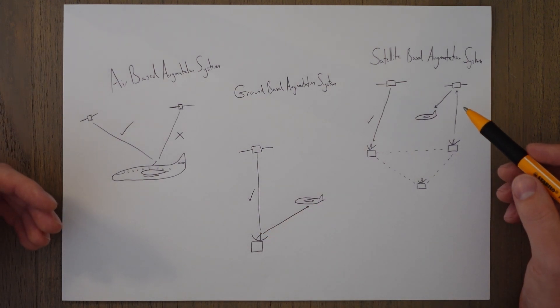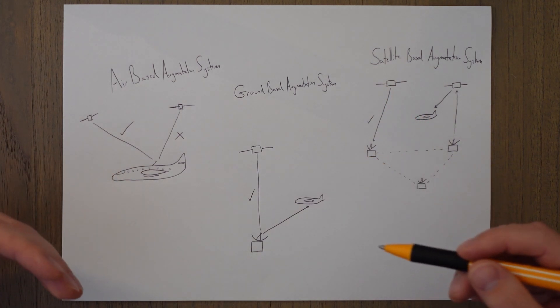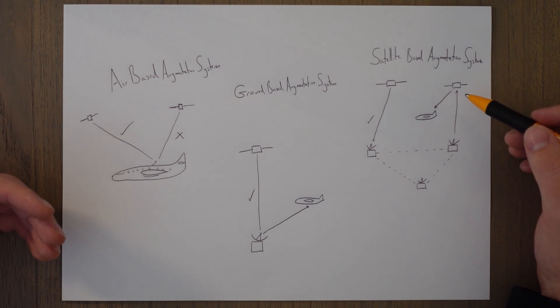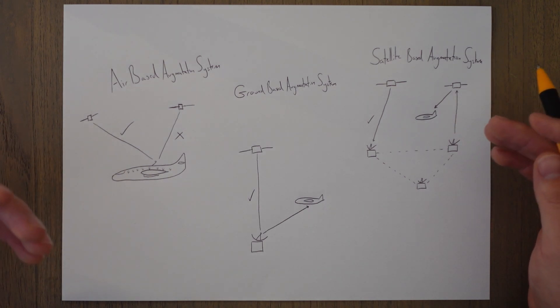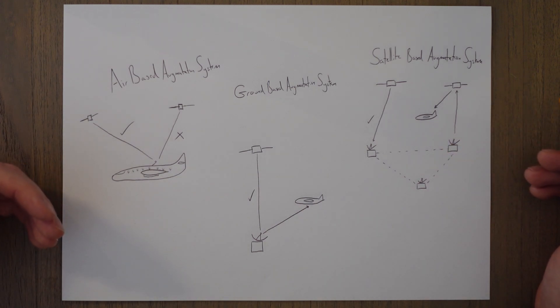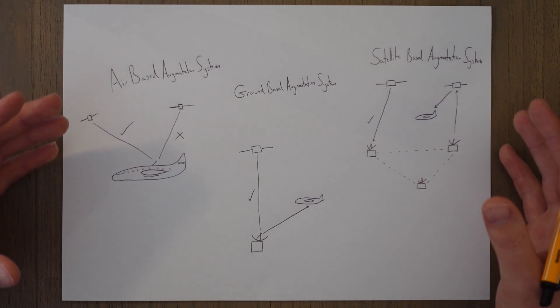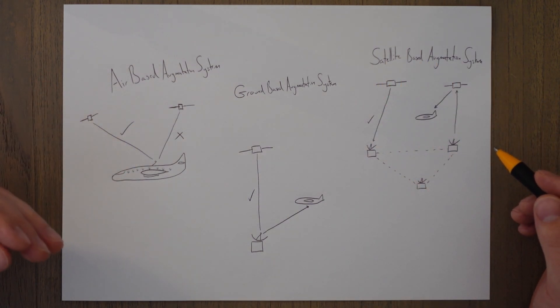And Satellite Based Augmentation, or SBAS, is where a large network of ground-based station monitors the reliability of the signals and sends augmentation data to satellites, which then send it back down to the aircraft for details on any corrections or reliability. These three systems are used to check that navigation information is correct and allows us to use satellite navigation to a very high level of accuracy and reliability.